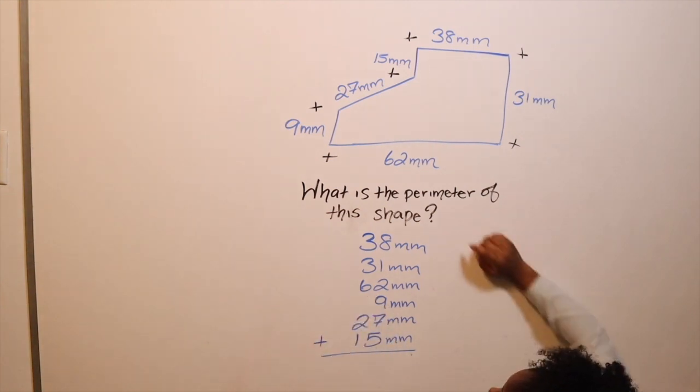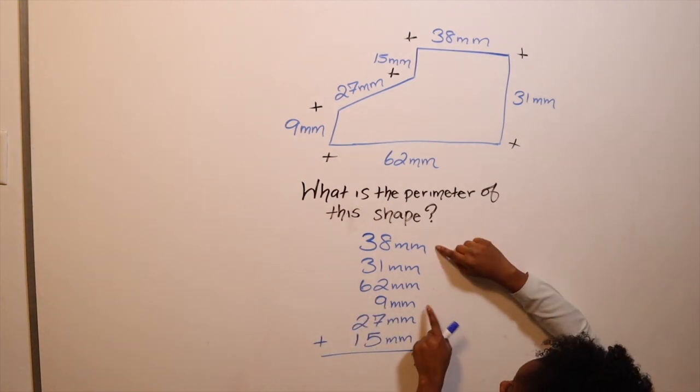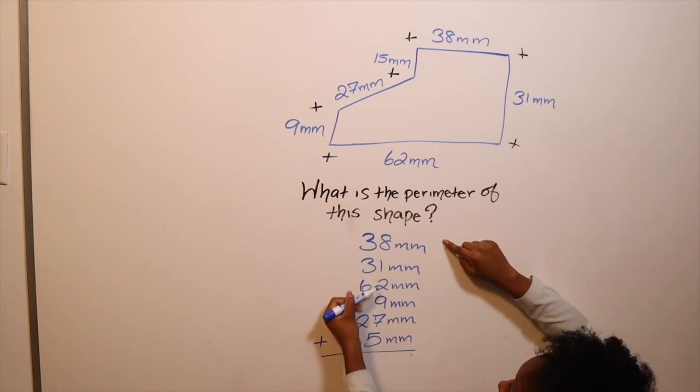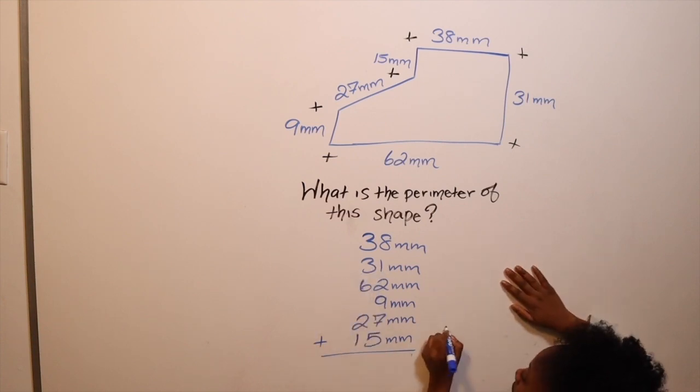So we're going to add. We're going to start with the two big ones here. Okay, so we know eight plus eight is sixteen. So this is... seventeen, eighteen, nineteen, twenty, twenty-one, twenty-two, twenty...